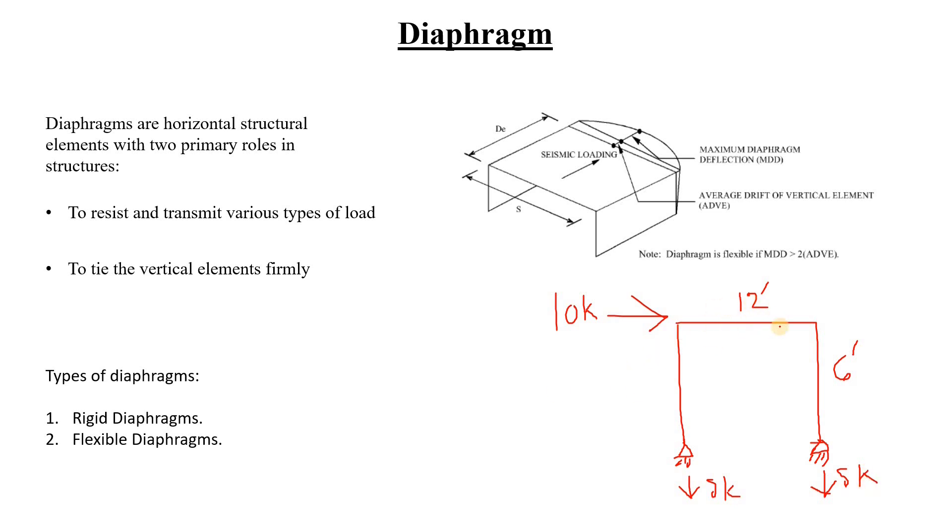Now, let's say that I remove this horizontal structural element. What will happen if I remove that? The scenario becomes something like that. We have one column here, we have another column here that don't have a connection, and we have a 10 kips load here.